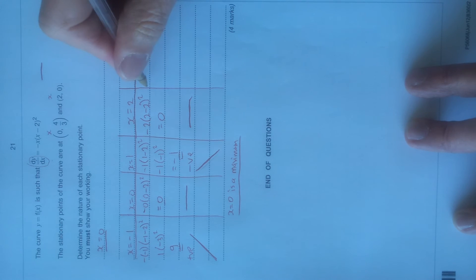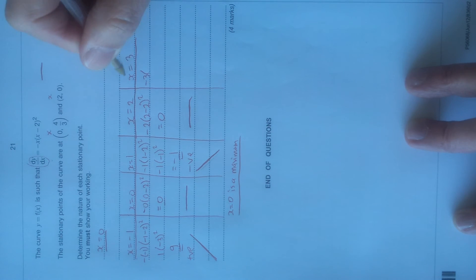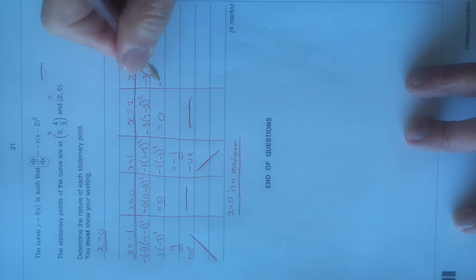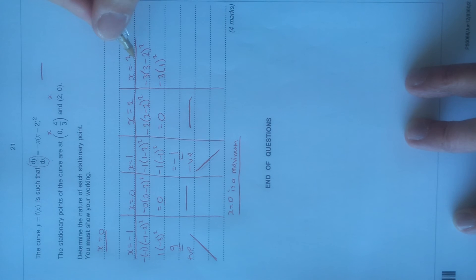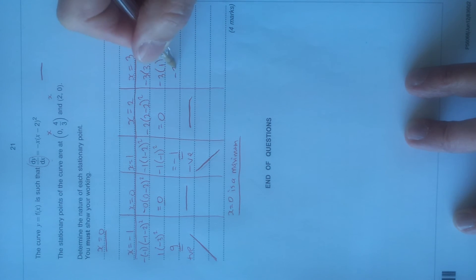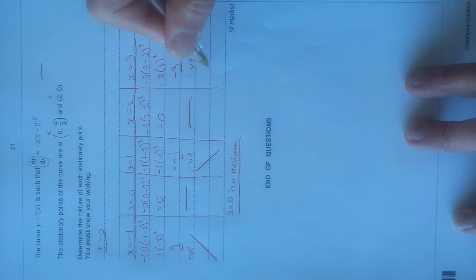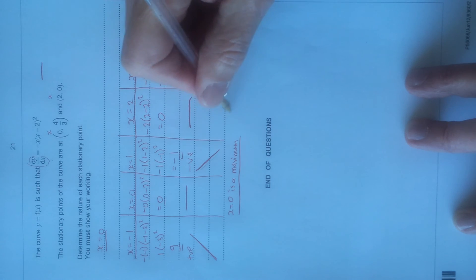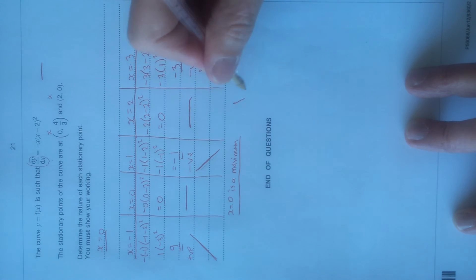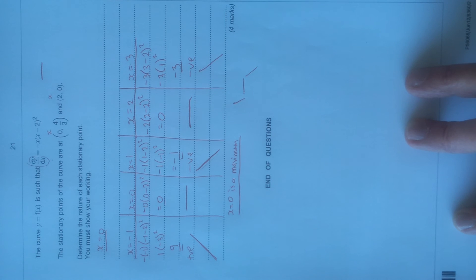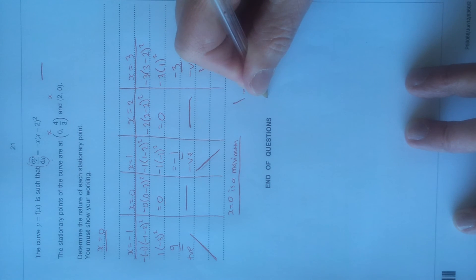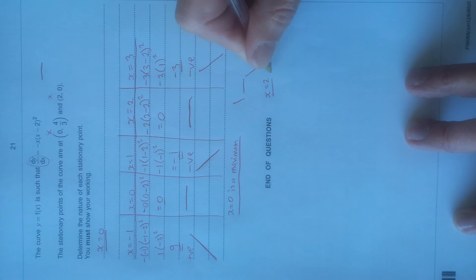Let's try x equals 3. Putting 3 in: minus 3 times (3 minus 2) all squared. Simplifying: minus 3 times 1 all squared, which is minus 3 times 1 equals minus 3 — negative. So from x equals 1 to x equals 2 to x equals 3, it goes negative, zero, negative — across and down and across. That is a point of inflection. So x equals 2 is a point of inflection.